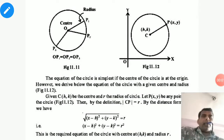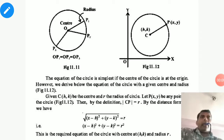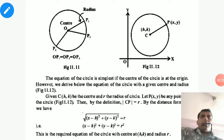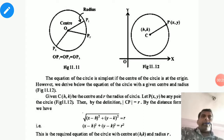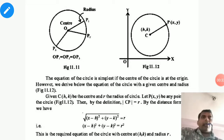Hello everyone. Here I am explaining conic section part 2. In part 1, I explained all 4 figures that we can generate by intersecting a right circular cone with a plane. You can see that video to understand all 4 diagrams — circle, ellipse, parabola, and hyperbola — and how you can find each section.